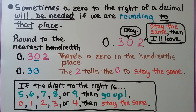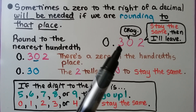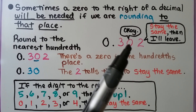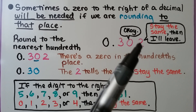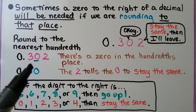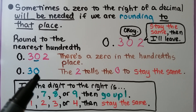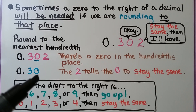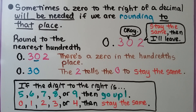Sometimes a zero to the right of a decimal will be needed if we are rounding to that place. We're going to be rounding 302 thousandths to the nearest hundredth place. The two tells the zero to stay the same, and then it is removed. There's a zero in the hundredths place. It rounds to 30 hundredths because we were rounding to the hundredths place. We need that zero to hold the hundredths place as a placeholder.